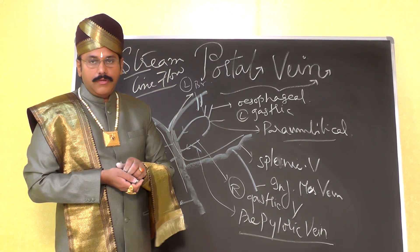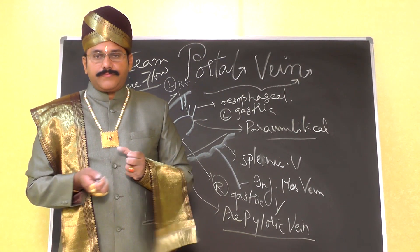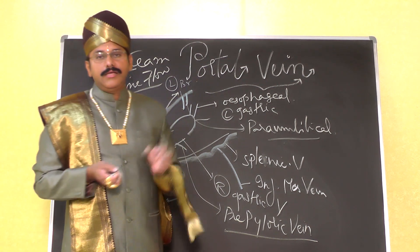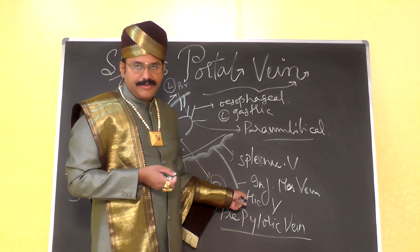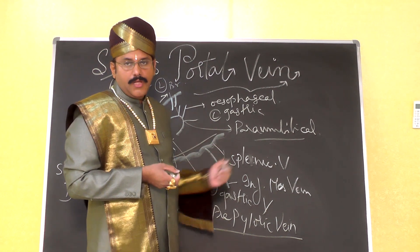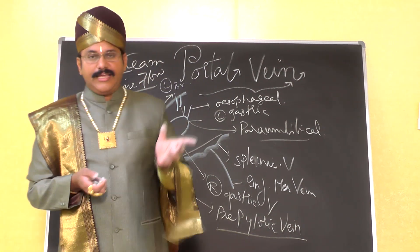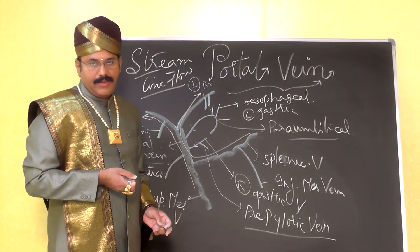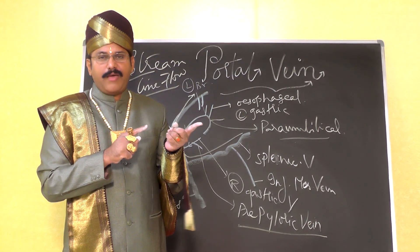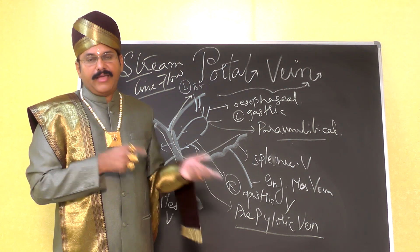These are the formative tributaries — the superior mesenteric vein and the splenic vein. The splenic vein is draining the spleen and the superior mesenteric vein is draining the lower part of the gut. The inferior mesenteric vein is an important tributary of the splenic vein, so the splenic vein also carries blood from the inferior mesenteric vein, again from the intestine. These two formative tributaries unite behind the neck of the pancreas to form the portal vein.